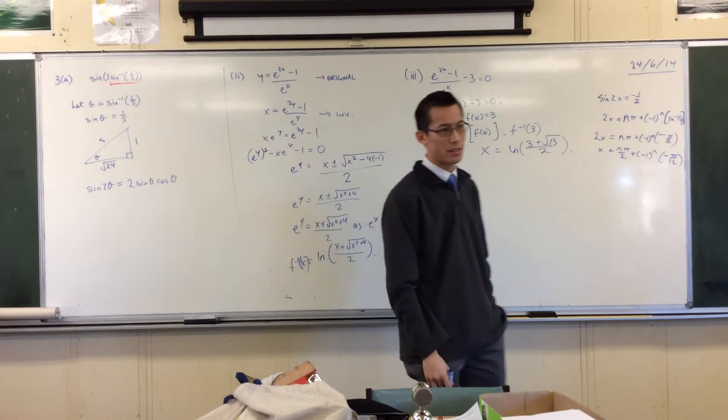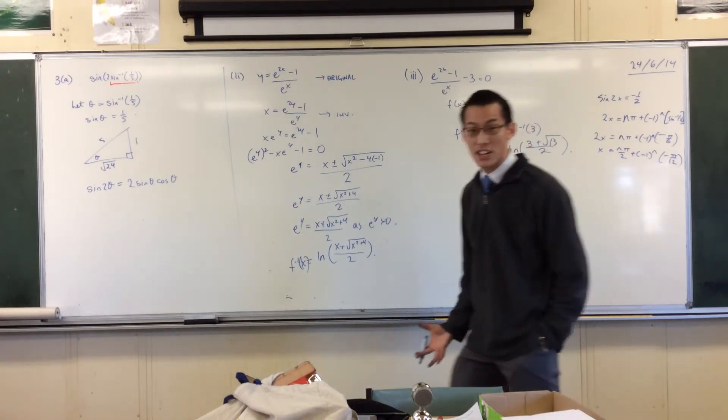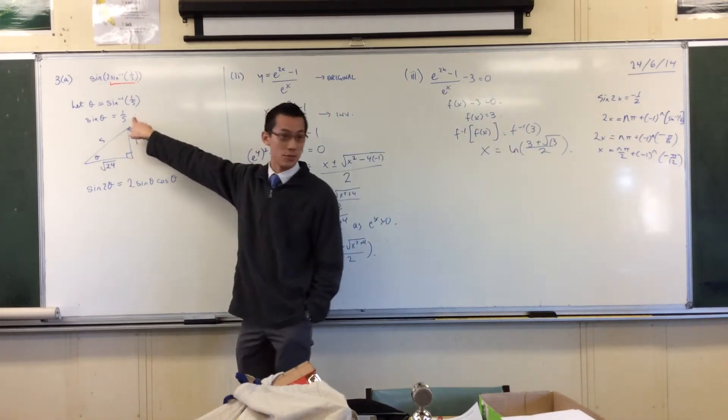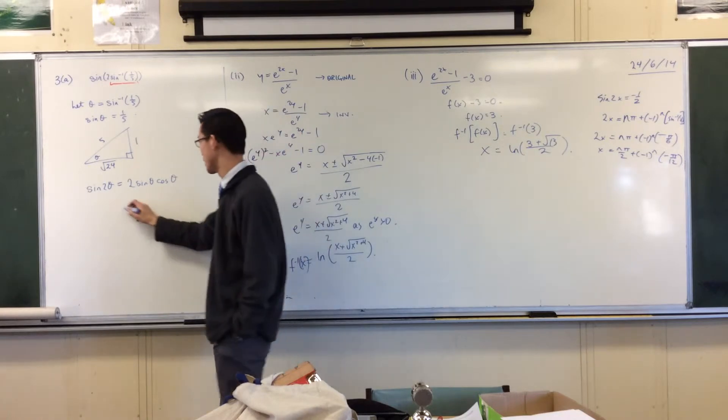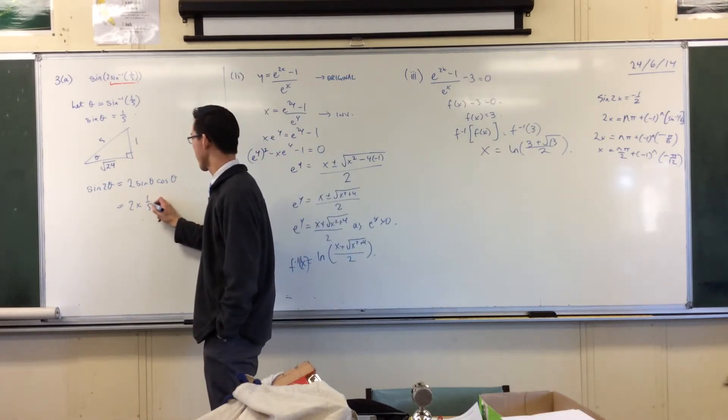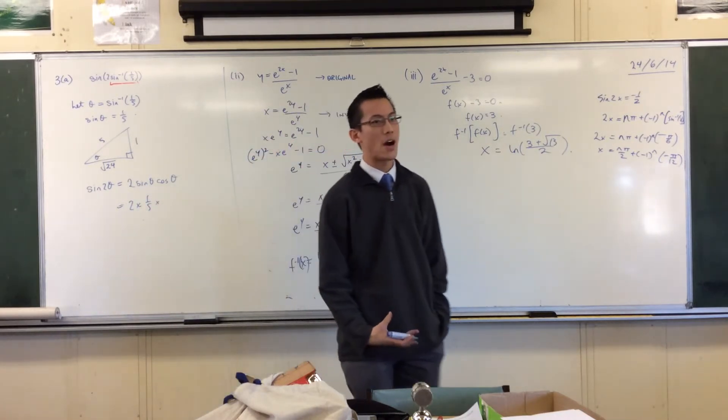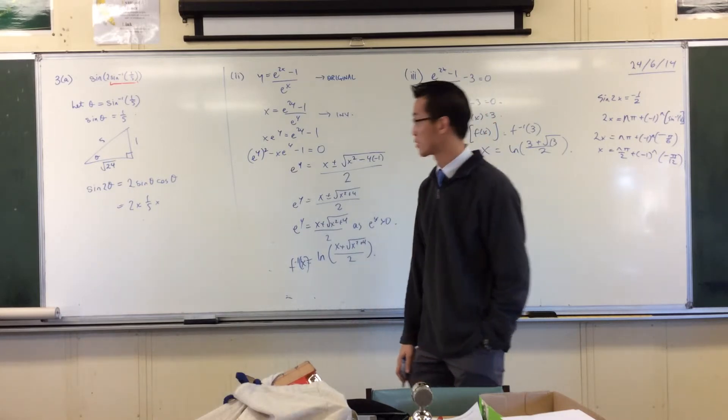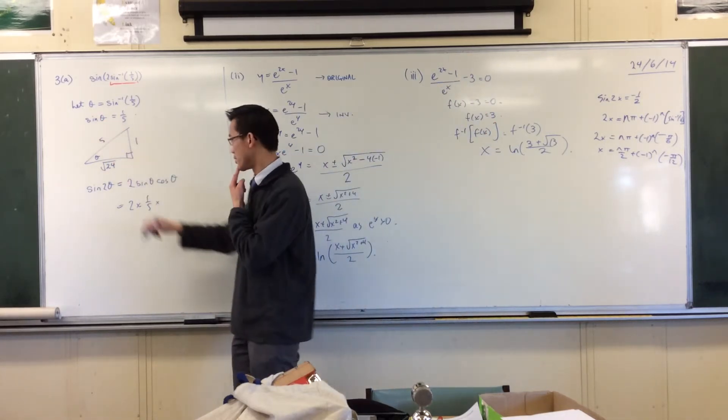Now you can see why the triangle is helpful. I already know what sine is because I defined it. I introduced theta in the first place, so it's a fifth. But what's cos? Well, now I need to appeal to this triangle that I've built. Cos is adjacent on hypotenuse.